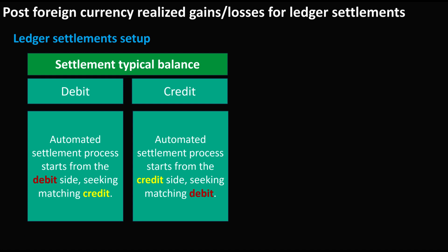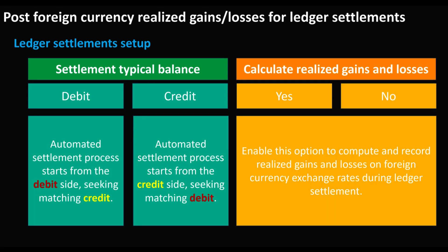The Settlement Typical Balance option specifies the sequence in which ledger settlement will be executed. Selecting Debit initiates the automated ledger settlement process by starting with the debit side and subsequently seeking corresponding credits. On the other hand, selecting Credit starts the automated ledger settlement process from the credit side and searches for the corresponding debits. This selection should align with the typical balance of the main account.